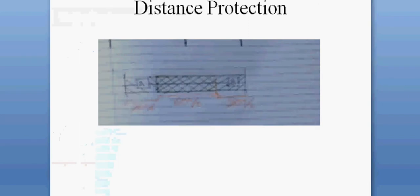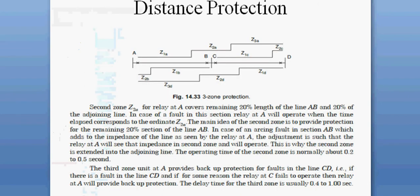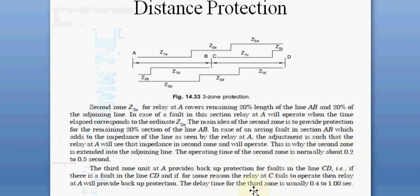This is the entire case of distance relay protection. The time of operation in Zone 2 is 0.2 to 0.5 seconds, and in Zone 3 the time delay is 0.4 to 1 second.